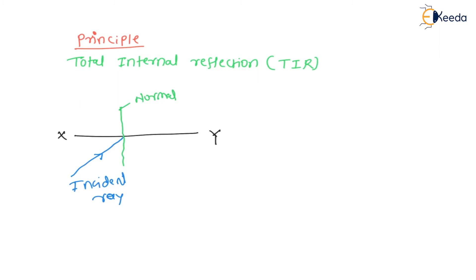Now suppose the medium from where light is coming is the denser one, and the other medium is the lighter one. As we know, whenever light comes from a denser medium and goes towards a lighter medium, it bends away from the normal. So this is the original path of the light, and here the light bends away from the normal — this is the refracted ray.